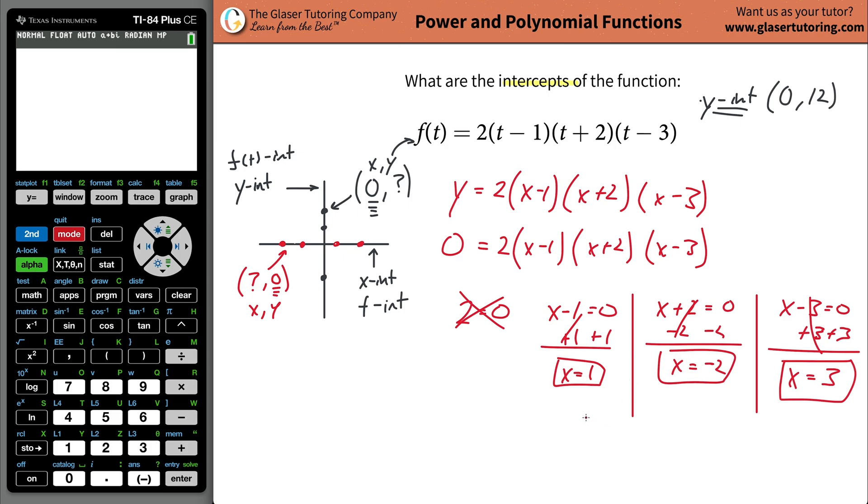And these are now known as the x-intercepts, meaning when the graph has a y value of zero. When the graph has a y value of zero, these are not coordinates. When the graph has a y value of zero, x could be 1, x could be negative 2, and x could be 3. Ordering this then from lowest to greatest, I'm just going to move these around just to make it look nice. And there you got it. These are now the x-intercepts.